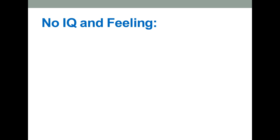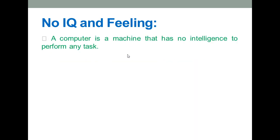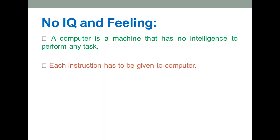The final characteristics fall under disadvantages. First, computer has no IQ. A computer is a machine with no intelligence of its own — all instructions must be given by the user. A computer cannot take any decision on its own; it only does what it is programmed to do. This is known as having no IQ.